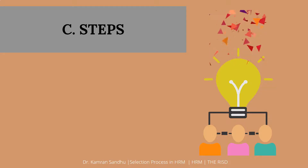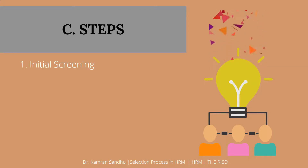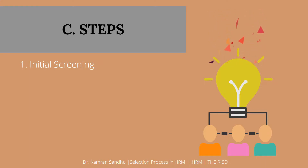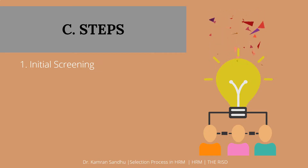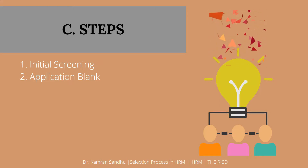Now, what are the steps in the selection process? The first step is initial screening, where you go through the resume or CV of the applicant. You will check the education level, experience, and any professional skills acquired by the applicant. Then you will review the application blank.